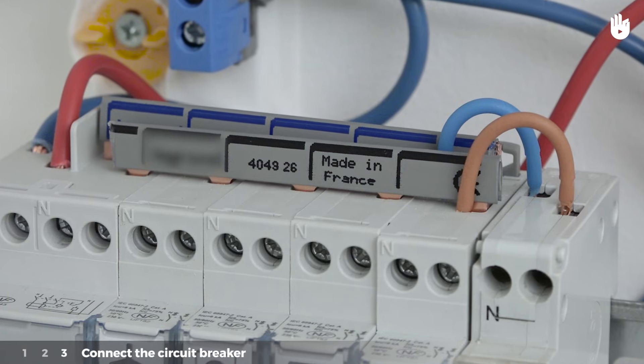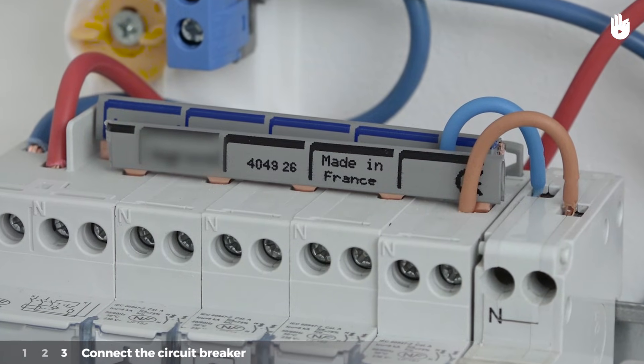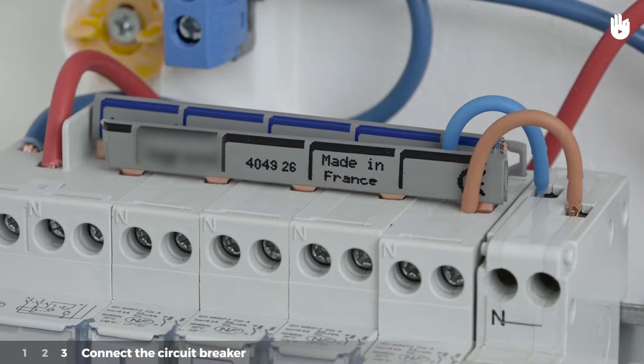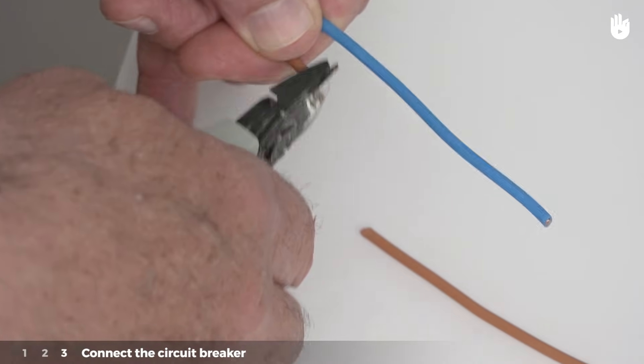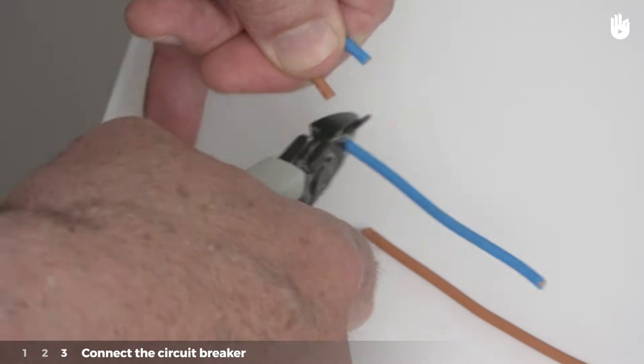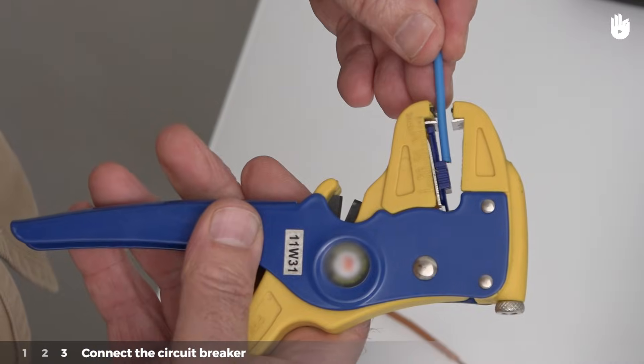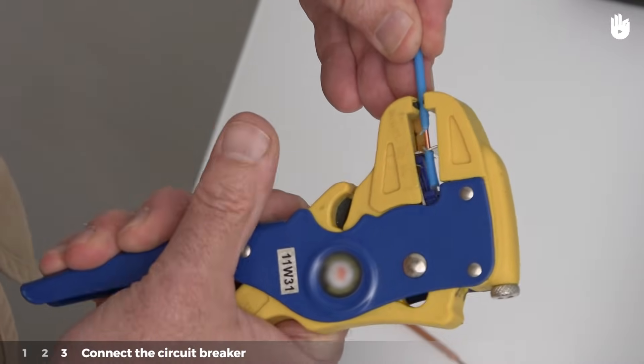Step three connect the circuit breaker. Cut two lengths of conductor wires of about five centimeters or two inches each. Strip the ends of the electrical wires with the wire stripper.